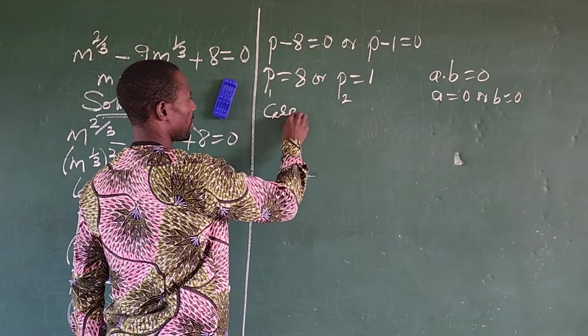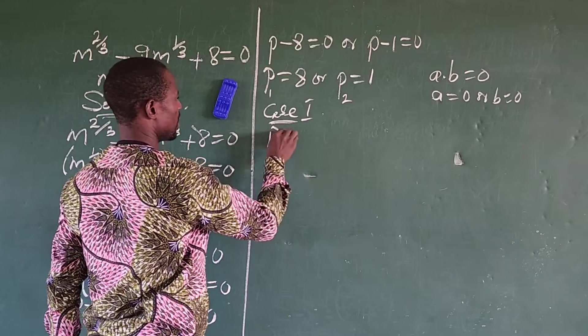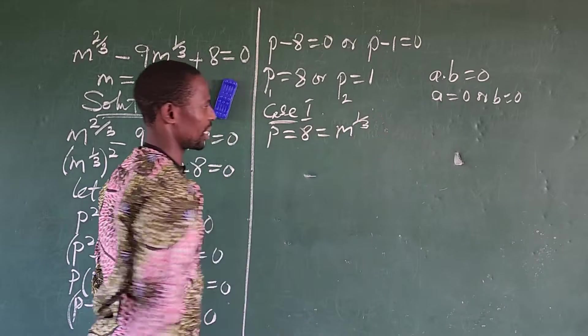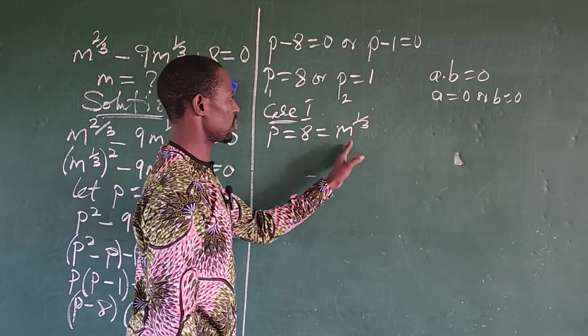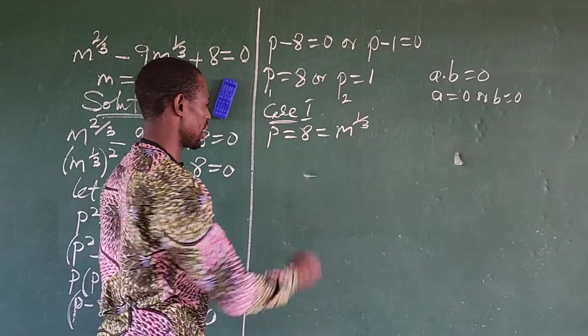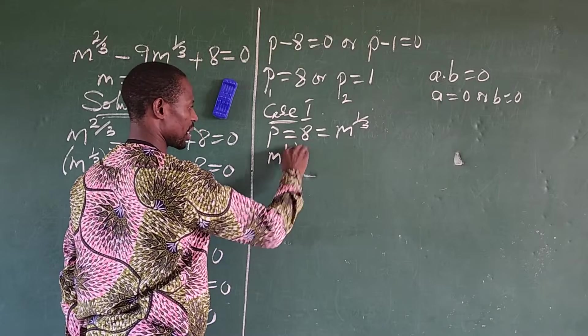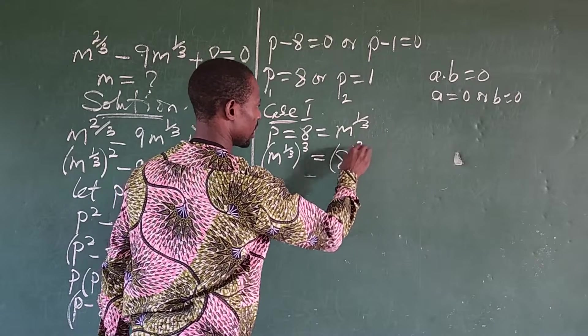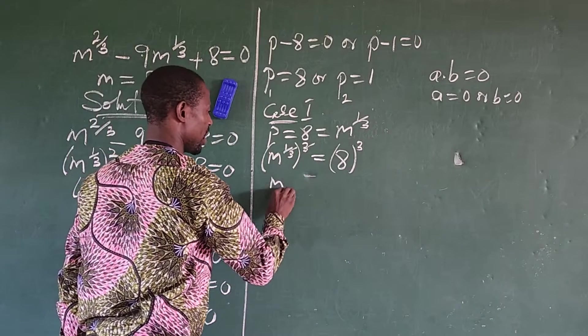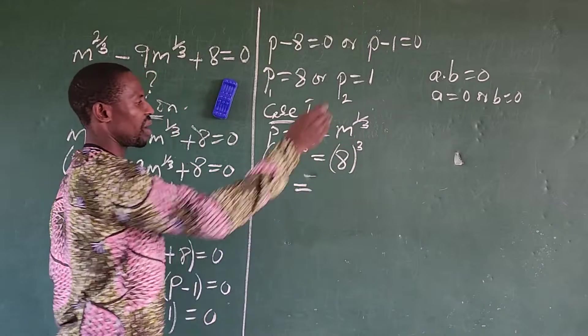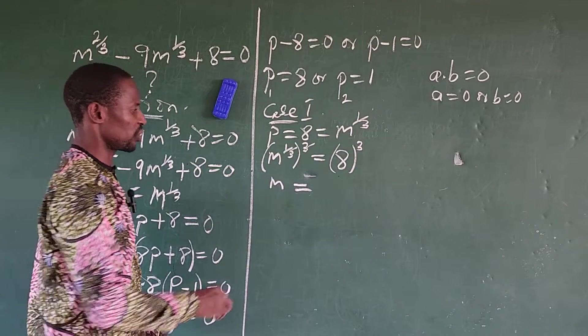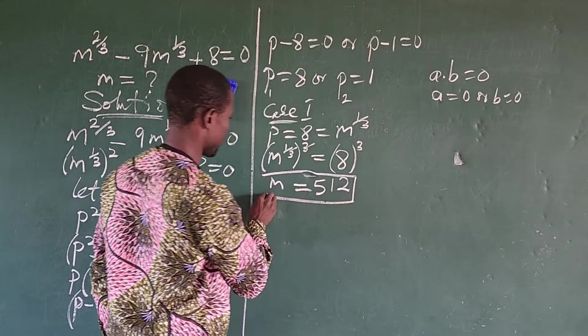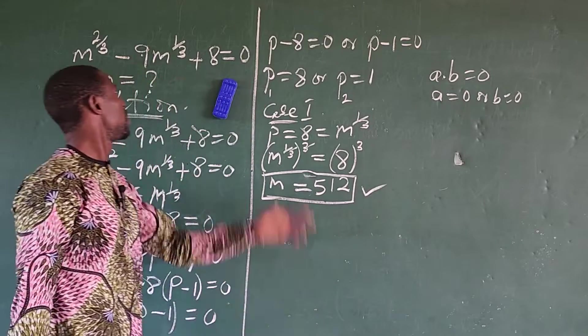But recall, we said somewhere here that let p is equal to m to the power of 1 over 3. So let's bring that down. So case 1, we have p equals 8, which is equal to m to the power of 1 over 3. So if I have to take this, what do we do? We take the cube of both sides. So this will now give us m to the power of 1 over 3 all to the power of 3 equals 8 to the power of 3. This cancels out, so we now have m equals 8 to the power of 3, that will give us 512. So this is the first value for our m.